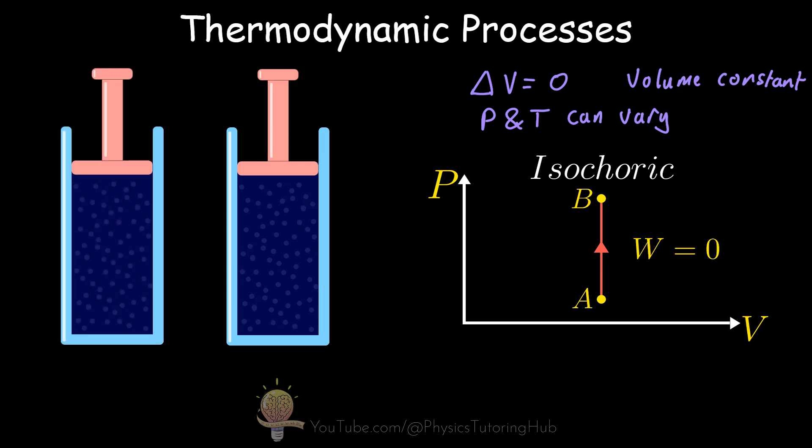So what does this look like on a PV diagram, a pressure-volume diagram? We have pressure on the y-axis and volume on the x-axis, and we're moving from state A to state B.